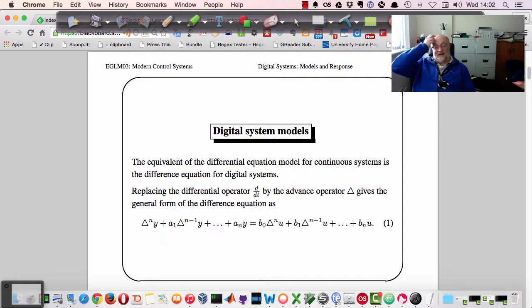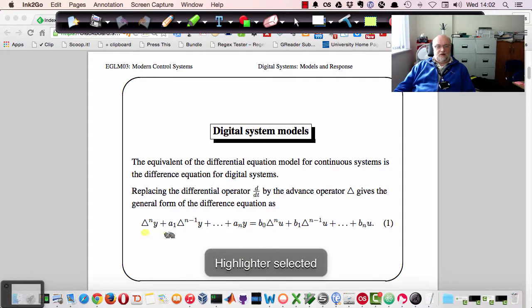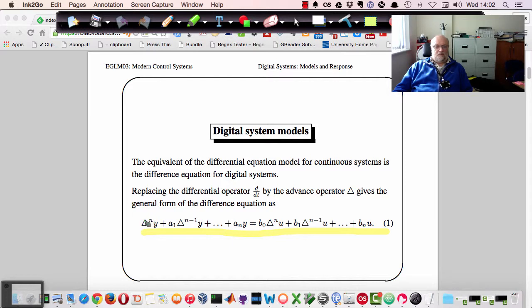And if we just take the direct analogy and replace d by dt, which is the derivative operator, by this triangle, then this is the advanced operator that we discussed in the last lecture, then we can write down a difference equation that will essentially be this.